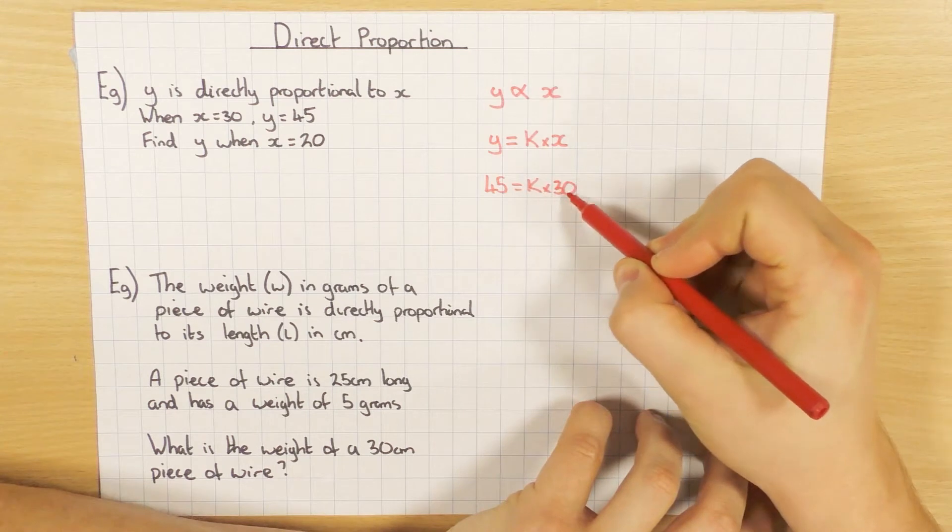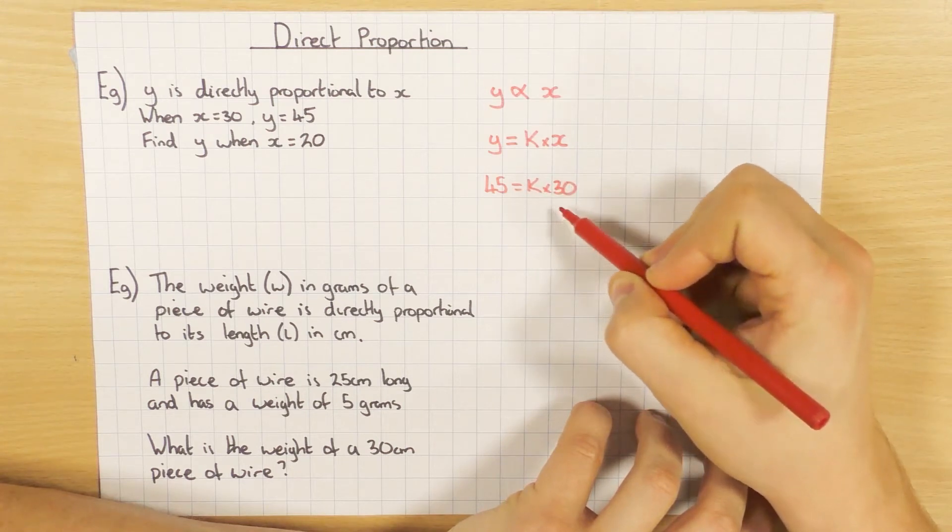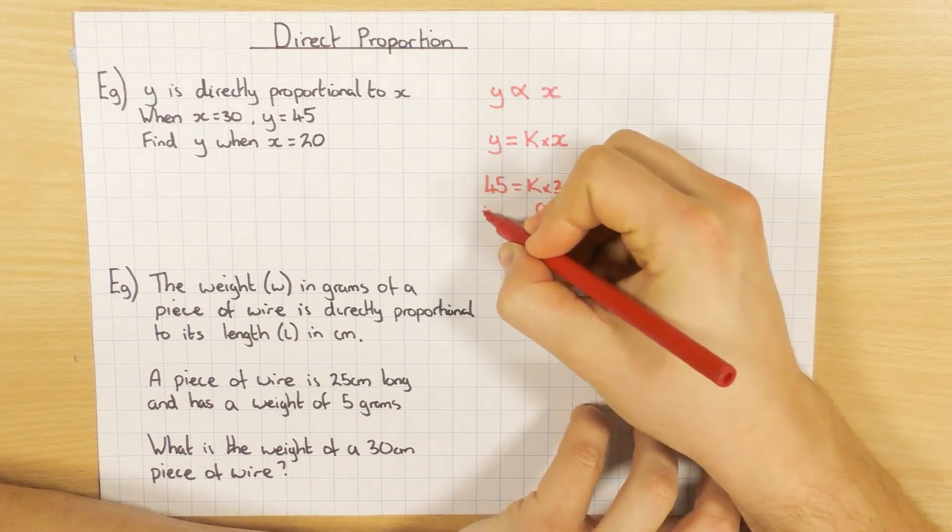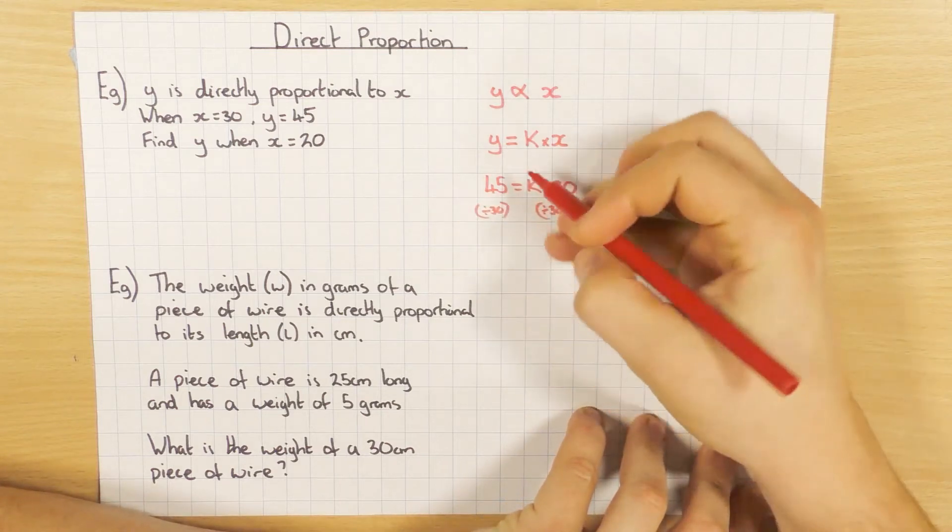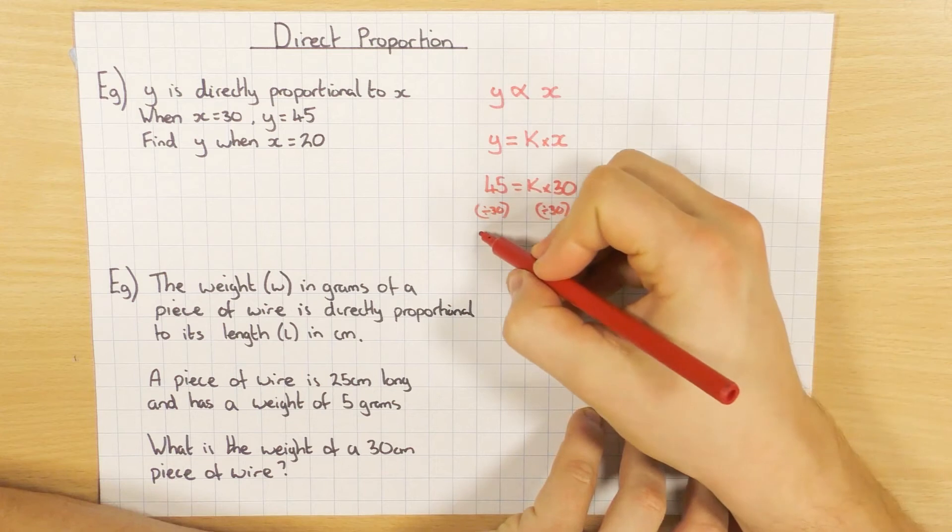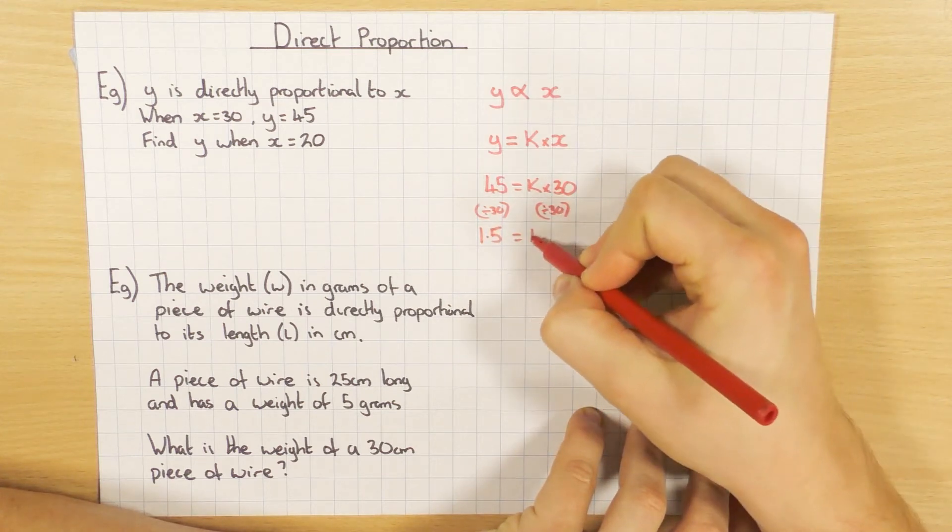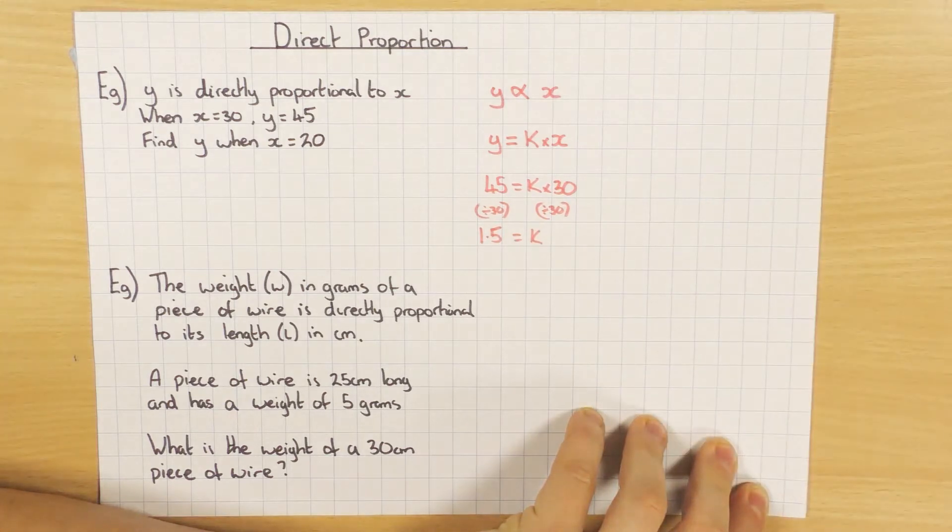So k times 30, because I'm times it by 30, I'll do the opposite and divide both sides by 30. So 45 divided by 30, 1.5, and then obviously k. So k equals 1.5.